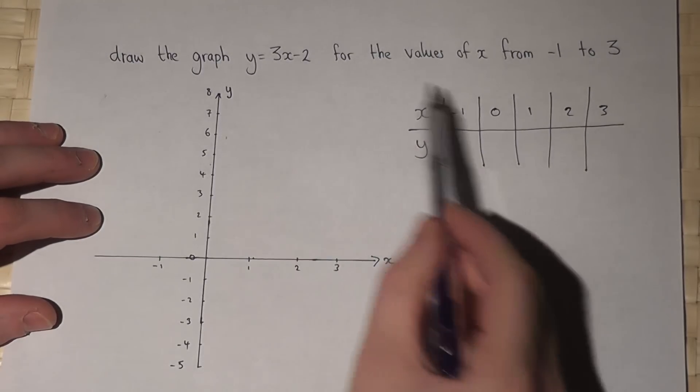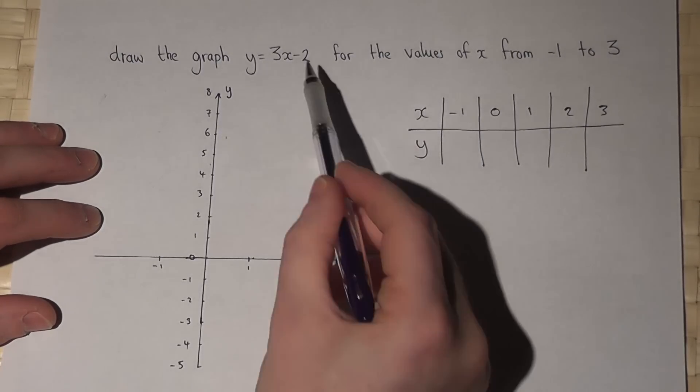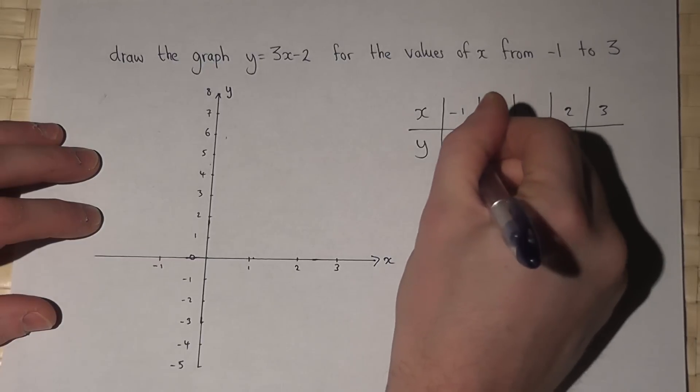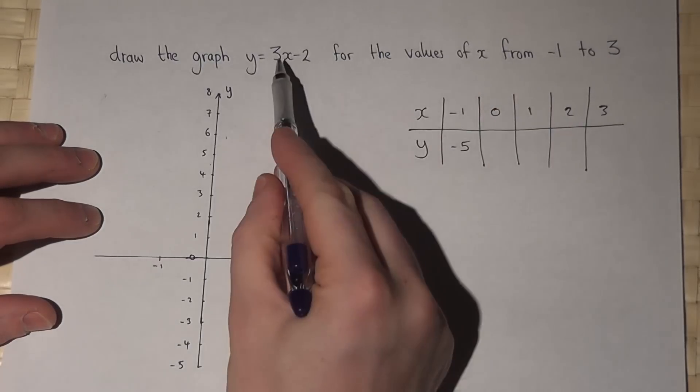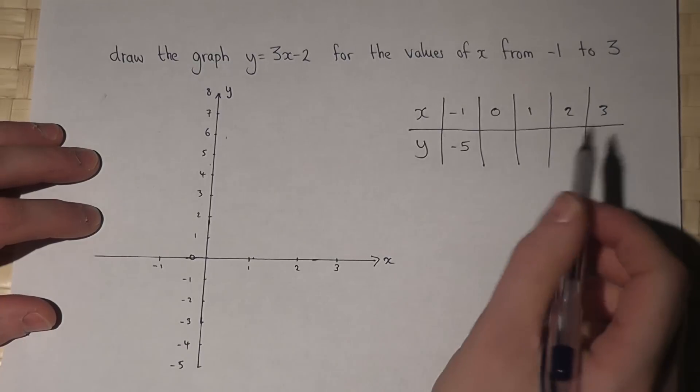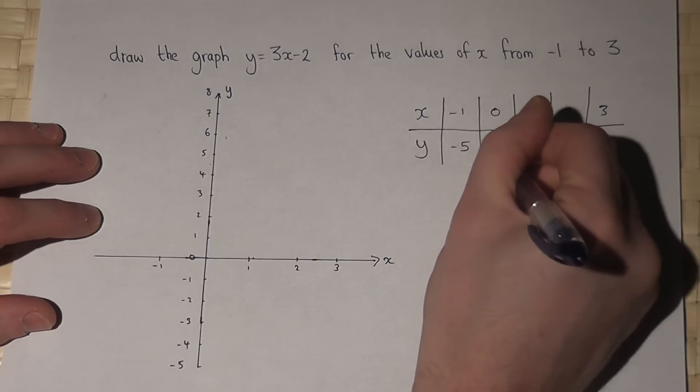Right, so 3 times minus 1 is minus 3, take away 2 is minus 5. 3 times 0 is 0, take away 2 is minus 2.